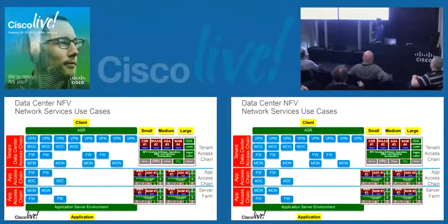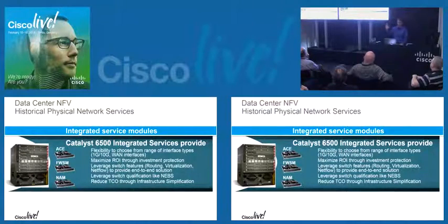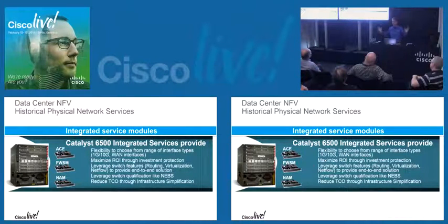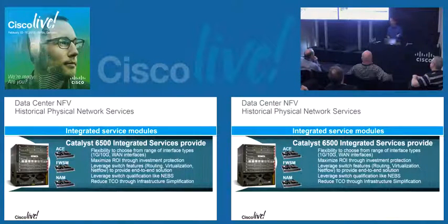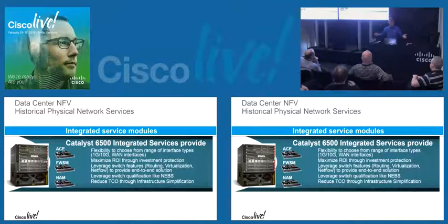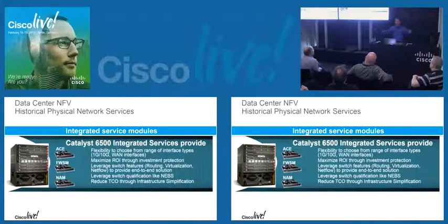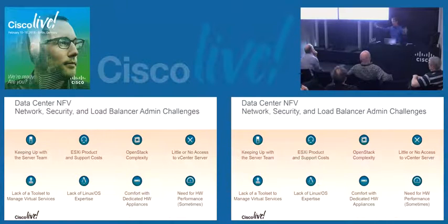How many people remember the Catalyst 6500 service chassis concept? When the Nexus 7K came out, we were like, is Cisco going to build blades for the 7K? We never really got around to it, so we took the 6K, stuck it on the side, and used a firewall service module and an ASIN. All of a sudden it became a service chassis — traffic went in, hit those service modules, and came back to the 7K. Think of that concept with x86 clusters off of the 7K or whatever the core switches.